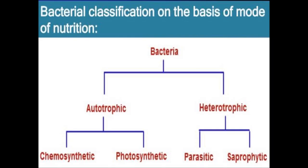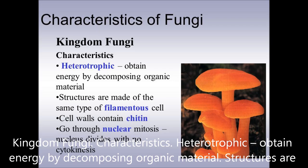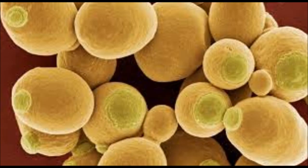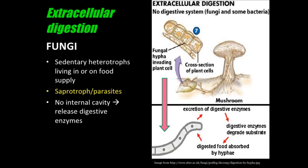Bacteria show a diverse type of nutrition. Some of them are autotrophs, some are saprotrophs and others are parasites. Now we will go into details about fungi. Fungi are non-green plants. As they lack chlorophyll pigments, they show a heterotrophic mode of nutrition. Fungi are saprotrophs — they grow on dead and decaying organic matter. They secrete enzymes outside the body which break down food into simple and soluble form, and then absorb it. This is called extracellular digestion.